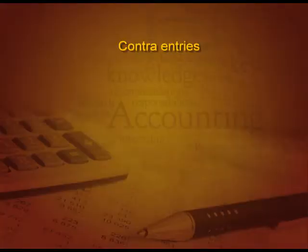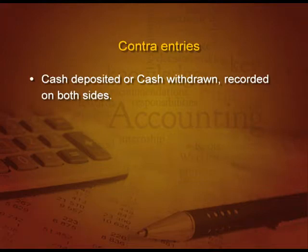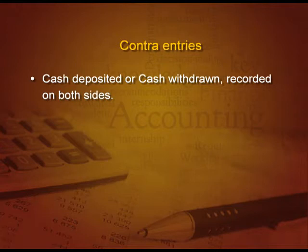Let us talk about contra entries. When we deposit cash or withdraw cash, it is effected on both sides of the cash book. For example, if I am receiving cash from the bank, the bank is going down on the credit side and the cash is increasing on the debit side. So in the same cash book there are two effects — one on the debit and one on the credit — and this is called a contra entry. We write a capital letter 'C' in inverted commas in the ledger folio column to signify this contra entry, so that we know this entry is going to affect both sides.